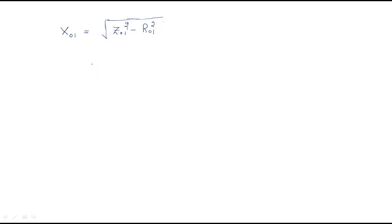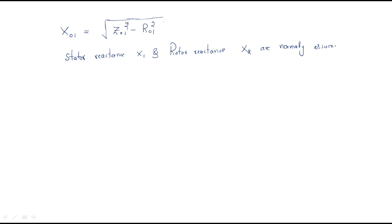To find X01, we use the condition that stator reactance X1 and rotor reactance X2 are normally assumed equal. Therefore X1 = X2 = X01 / 2.